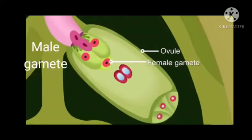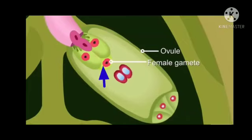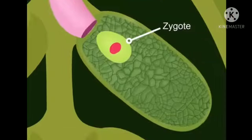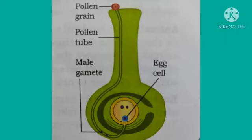The male gamete fuses with the female gamete or the egg cell present inside the ovule to form a zygote. After fertilization,